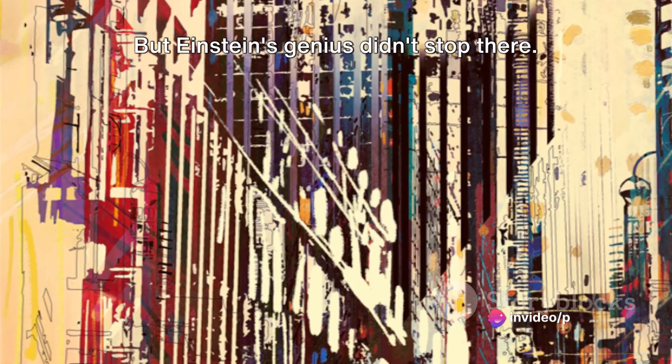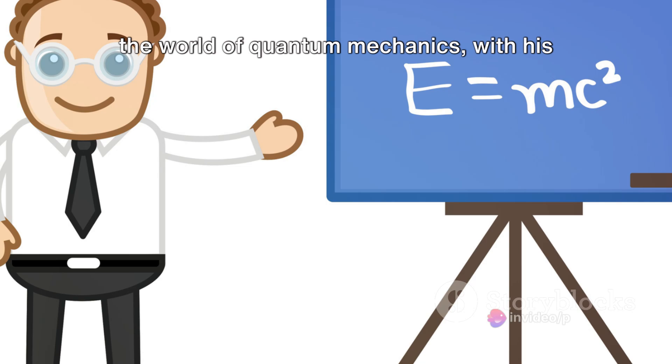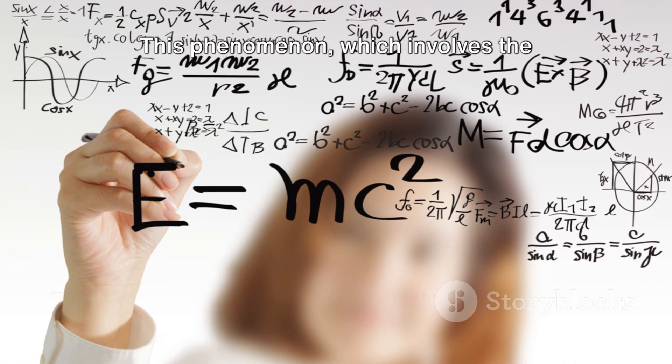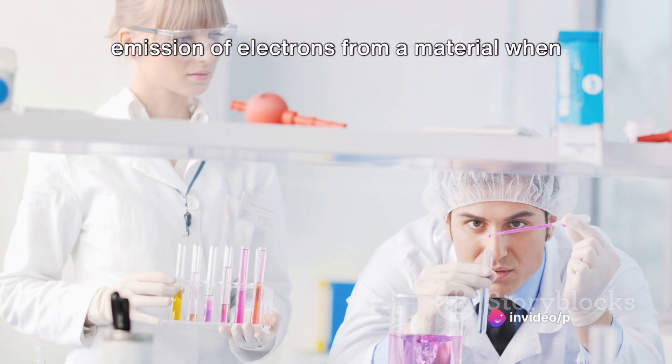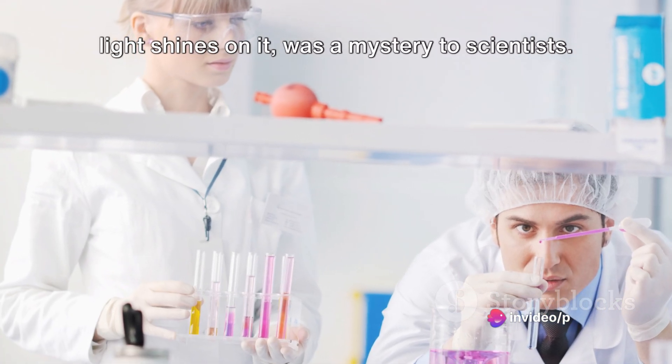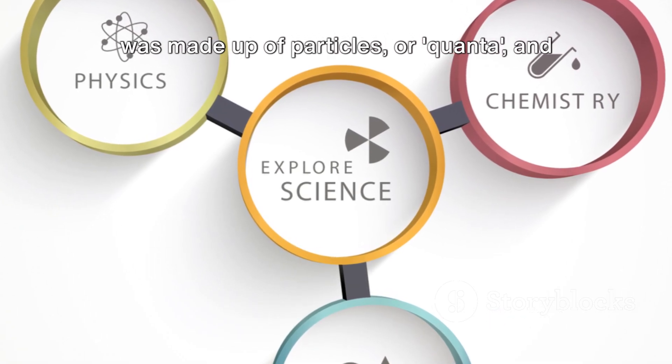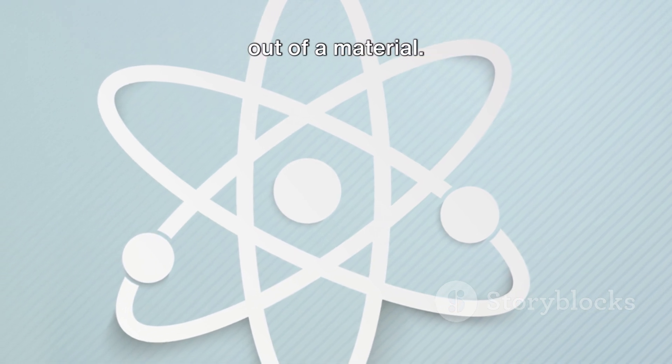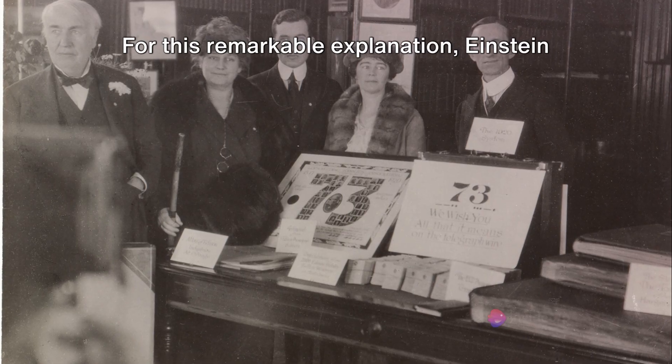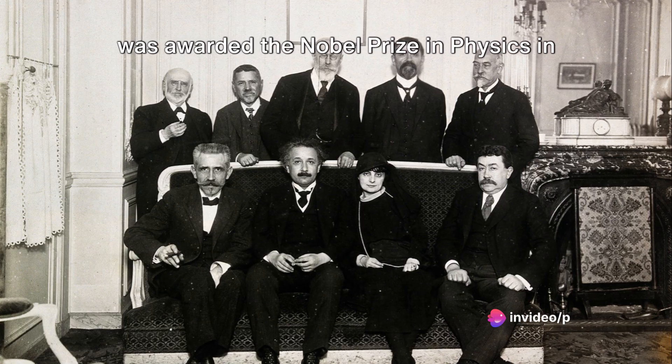But Einstein's genius didn't stop there. He also made significant contributions to the world of quantum mechanics with his explanation of the photoelectric effect. This phenomenon, which involves the emission of electrons from a material when light shines on it, was a mystery to scientists. Einstein, however, proposed that light was made up of particles, or quanta, and that these particles could knock electrons out of a material. For this remarkable explanation, Einstein was awarded the Nobel Prize in Physics in 1921.